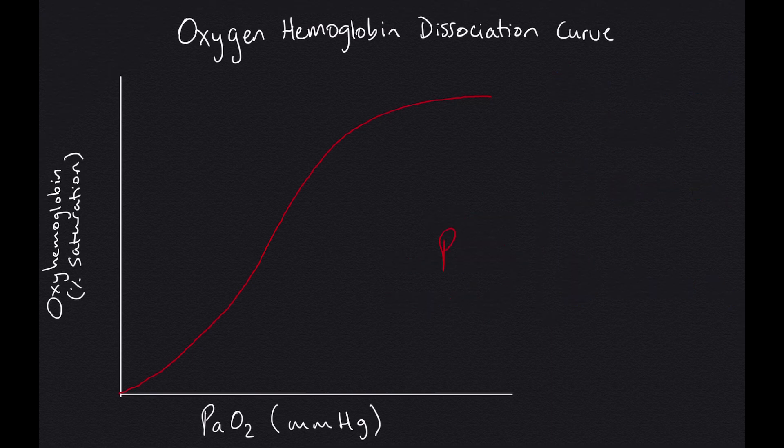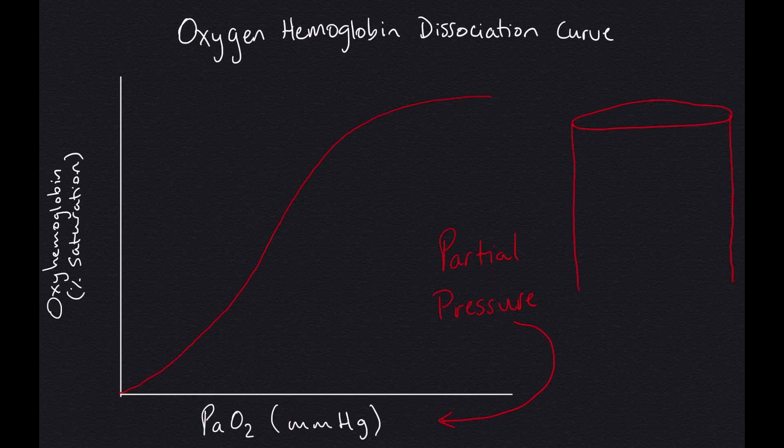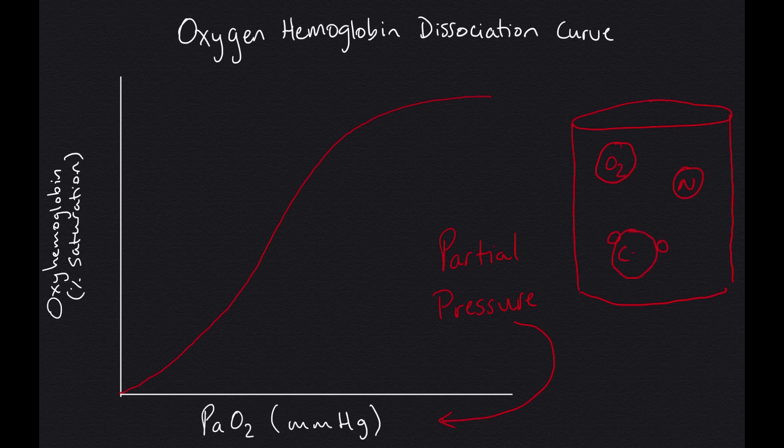First, we have here on the x-axis the partial pressure of oxygen. The partial pressure of any gas refers to the pressure of that gas inside a mixture of gases inside a container. This partial pressure reading is given in millimeters of mercury and corresponds to the total pressure that the single gas would be exerting if it were occupying the whole volume that the gases are contained in.